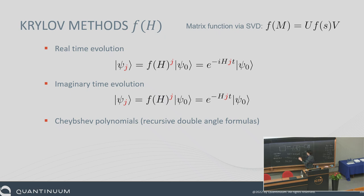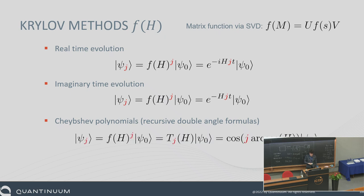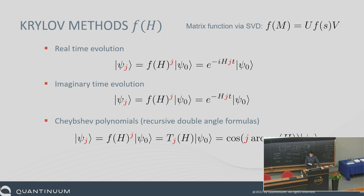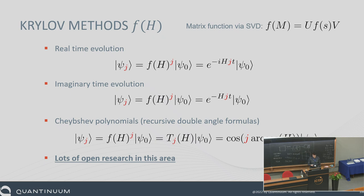Finally, there's a very sexy topic at the moment — you know the double angle formula you learned in high school, and if you recursively apply that n times you get the Chebyshev polynomials. These have recently been shown to be implementable by Grover reflections recursively and iteratively. Finding and implementing these functions on quantum computers is really open research.